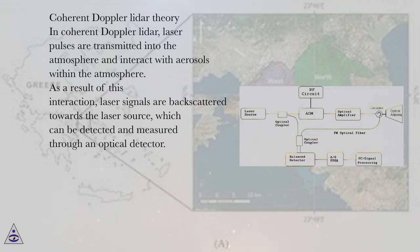Coherent Doppler-LIDAR theory. In coherent Doppler-LIDAR, laser pulses are transmitted into the atmosphere and interact with aerosols within the atmosphere. As a result of this interaction, laser signals are backscattered towards the laser source, which can be detected and measured through an optical detector.